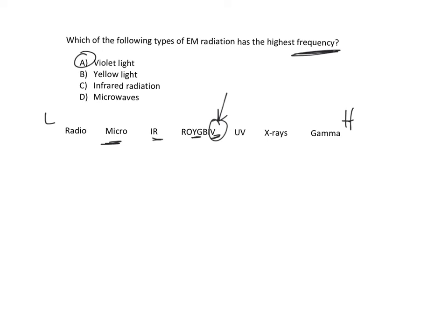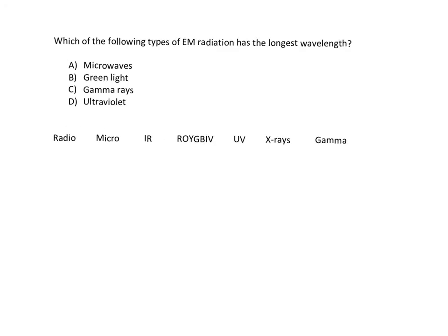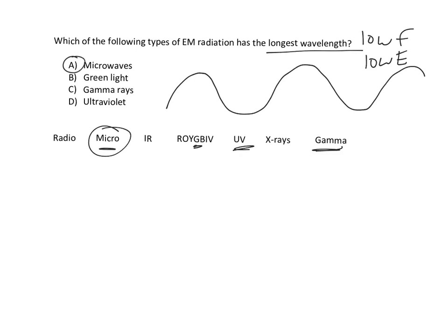Again, this is sort of the way we do it. This one's asking for the longest wavelengths. Remember, if the wavelength is long, the frequency is low. So it's basically asking which one has the lowest frequency. And remember, low frequency basically means low energy. So which of these has the lowest energy of our choices? So here's micro, here's green, here's gamma, here's UV. So microwaves have the lowest energy of these choices, which means the longest wavelength. So that's the thought process that you do going through this.